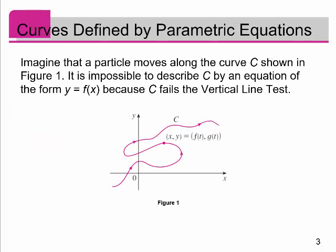Imagine you have a particle and it's going to move along the curve C shown here in figure 1. This particle is only going to move in the x-y plane, and these arrows indicate how the particle is moving — it's following this type of path. Looking at this, you can see that it's impossible to describe this curve C by an equation of the form y equals f of x, because obviously this curve fails the vertical line test, so the curve itself is not a function.